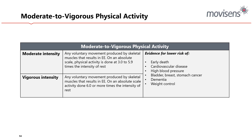Moderate to vigorous physical activity: there is a lot of evidence for a lower risk of early death, cardiovascular disease, high blood pressure, bladder, breast, stomach, and other cancers, dementia, and weight control. Moderate intensity is any voluntary movement produced by skeletal muscles resulting in energy expenditure of 3 to 5.9 MET on an absolute scale. Vigorous is when you're really pushing it — 6 or more times the intensity of rest.